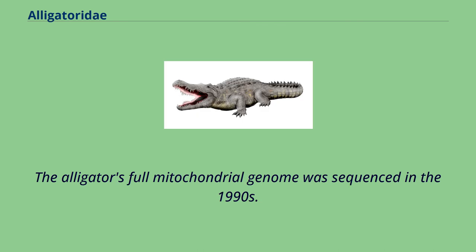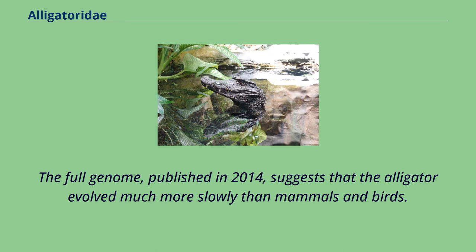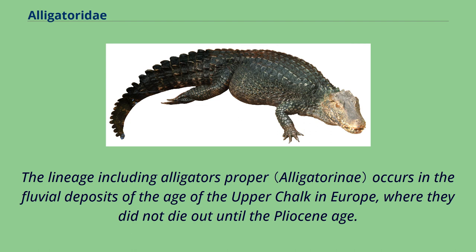The alligator's full mitochondrial genome was sequenced in the 1990s. The full genome, published in 2014, suggests that the alligator evolved much more slowly than mammals and birds. The lineage including alligators proper occurs in the fluvial deposits of the Upper Chalk in Europe, where they did not die out until the Pliocene.